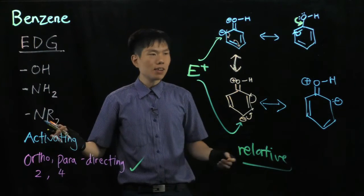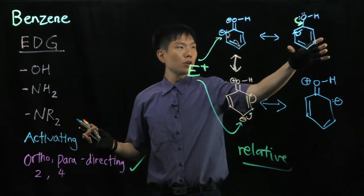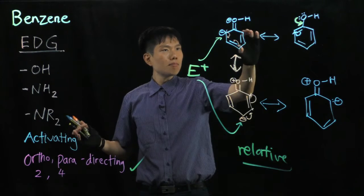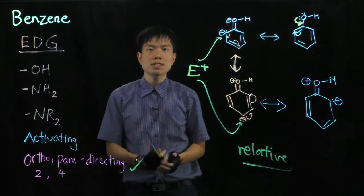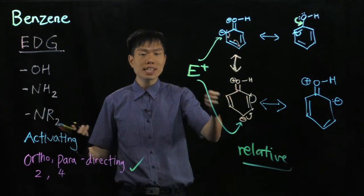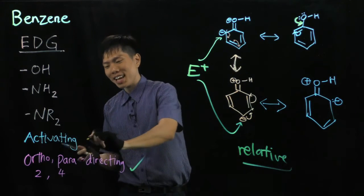Now, why is it activating? Very simple. Compared to before, before I draw this structure here, the ring has gained some negative charge, which means electron density has increased. When electron density increases, it attracts more electrophile, and hence the ring is activated.